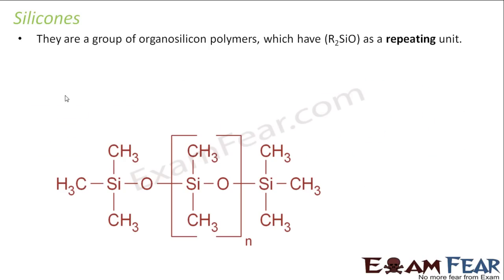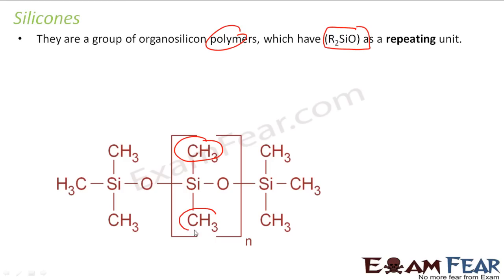Let's talk about another important compound called silicones. Silicones are nothing but polymers which have R2SiO in a repeating unit — for example, R1 and R2, giving R2SiO in repeating n-form. It is called silicones.